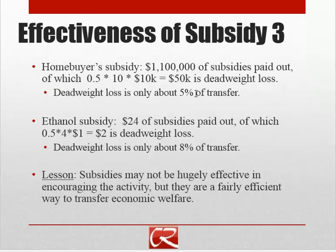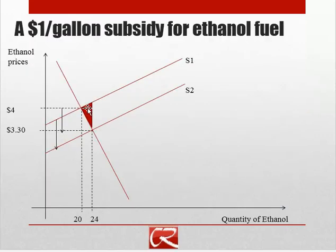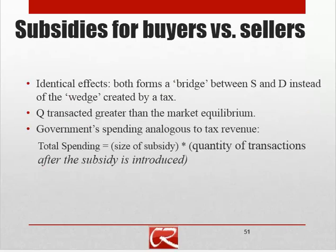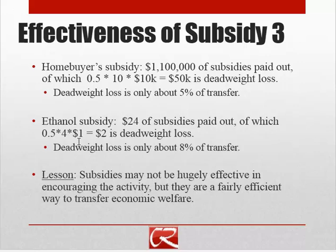So $50,000 of deadweight loss compared to $1,100,000 paid out means deadweight loss is only about 5% of the transfer. Compared to something like price controls, where deadweight loss was something like 80% of the transfer, subsidies look like a much more attractive way to redistribute economic welfare. In the ethanol example, deadweight loss is one-half times 4 units times $1, giving $2 of deadweight loss — about 8% of the transfer — again a pretty efficient way to redistribute economic welfare.